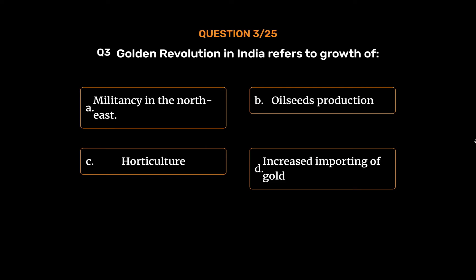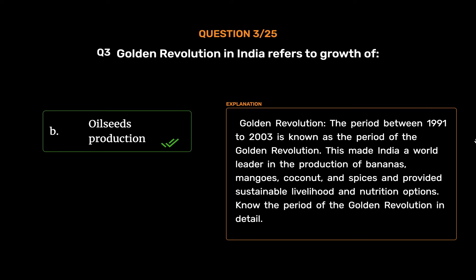The correct answer is Option B: Oil seeds production. Golden revolution — the period between 1991 to 2003 is known as the period of the golden revolution. This made India a world leader in the production of bananas, mangoes, coconut, and spices and provided sustainable livelihood and nutrition options.